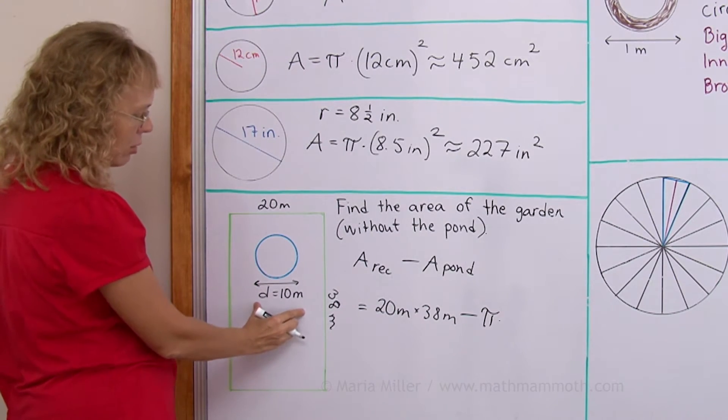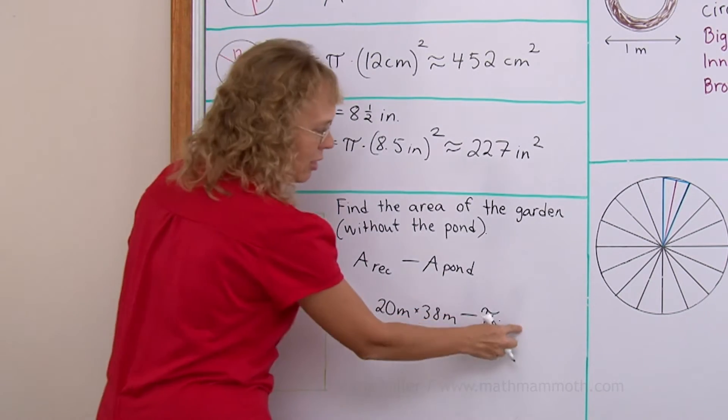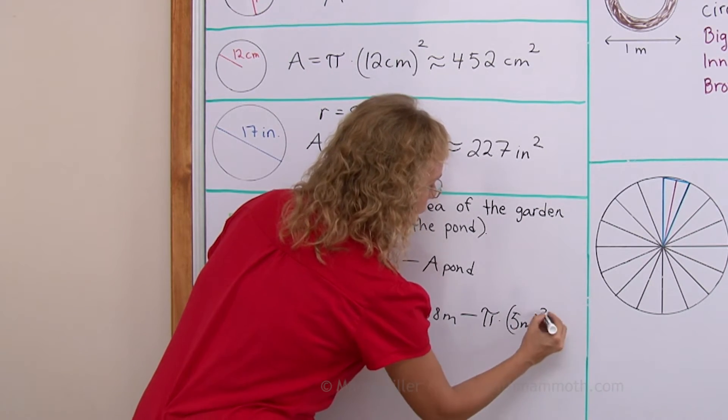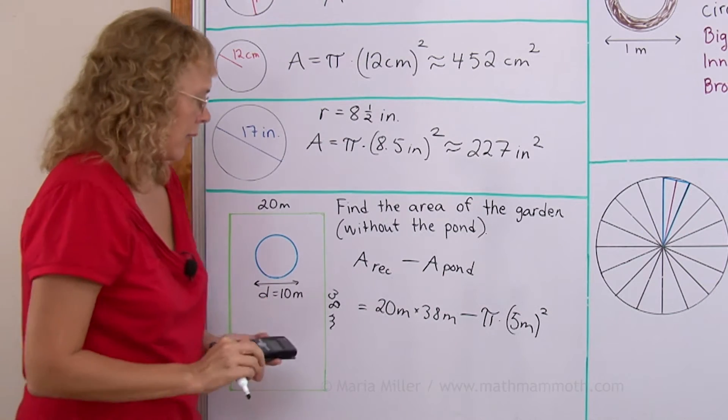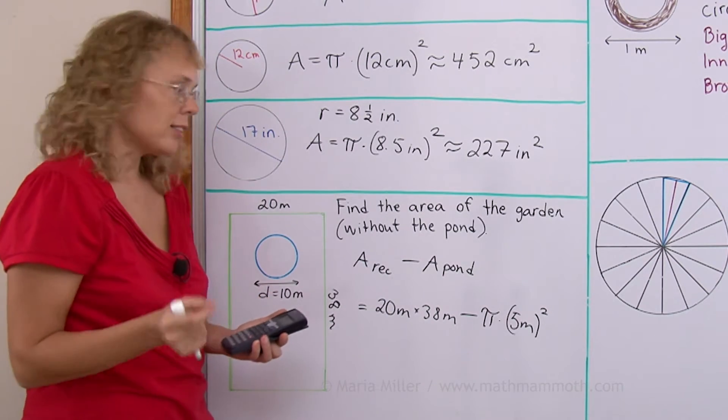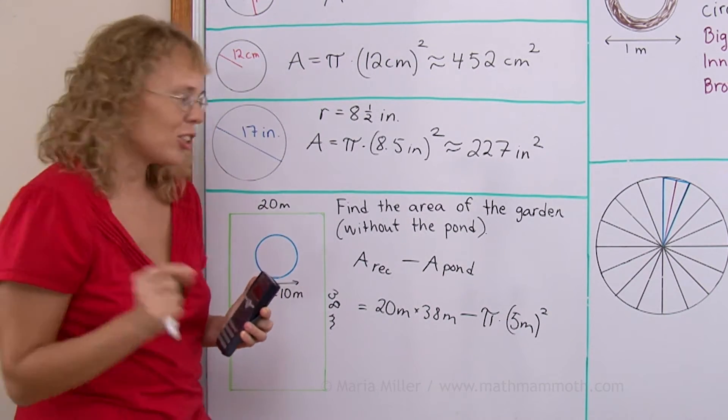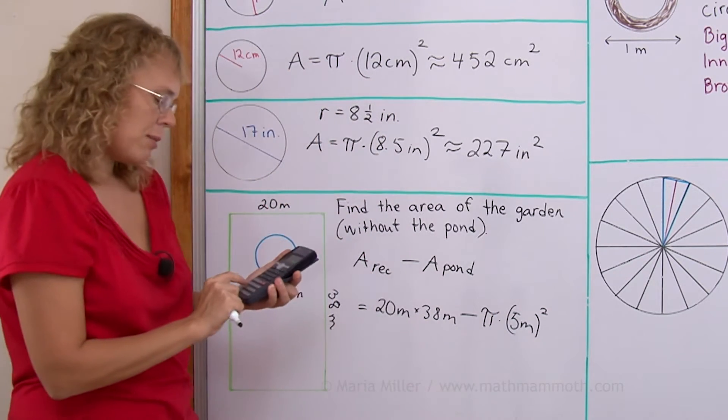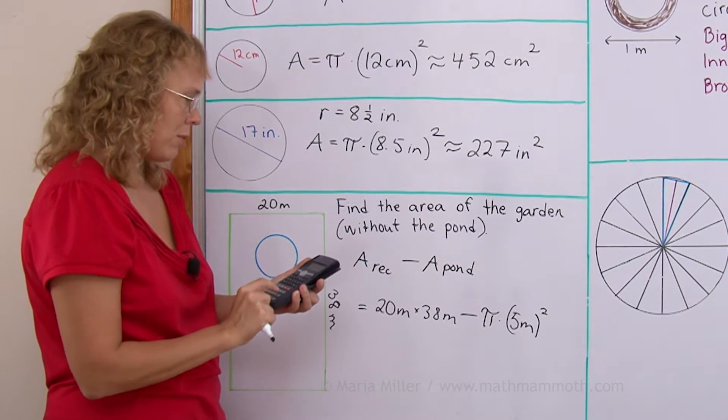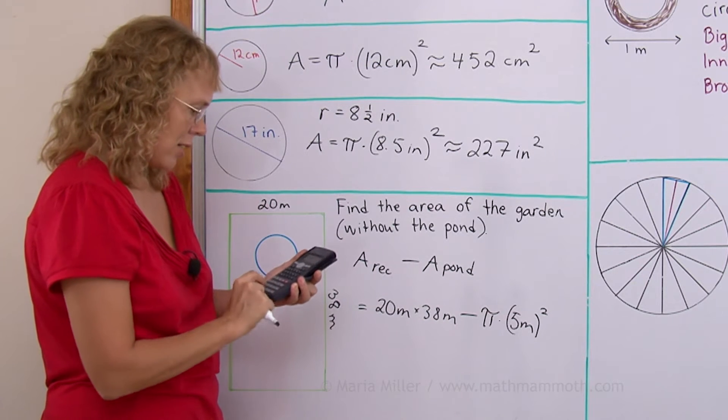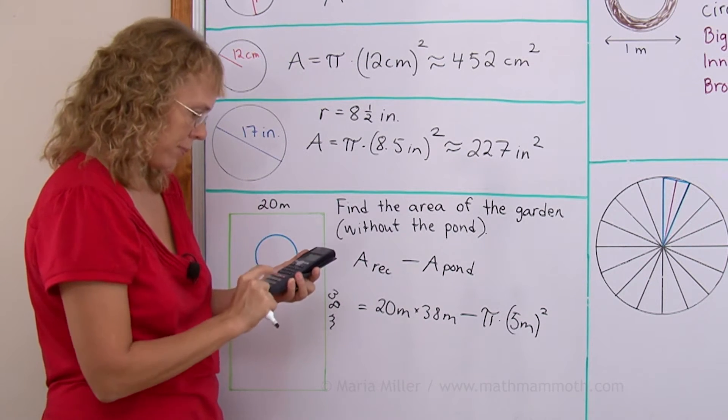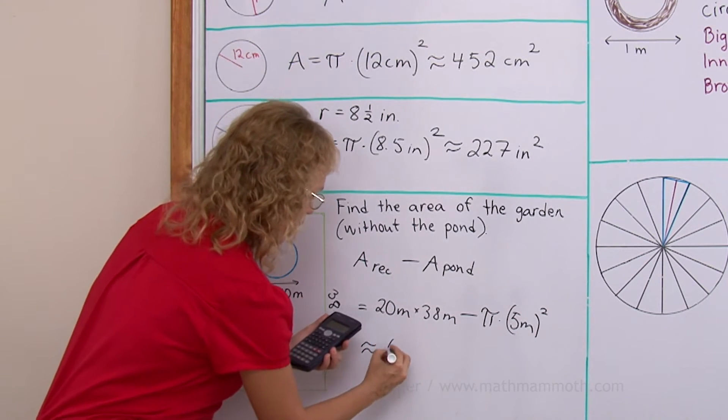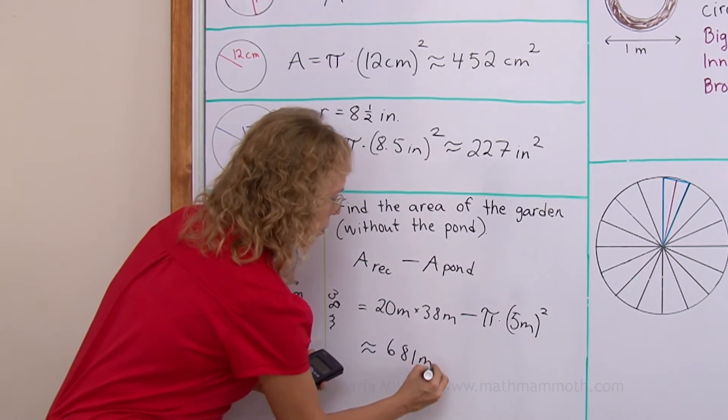And the radius is not given, so note it carefully. You cannot put 10 meters there. You have to take half of it, 5 meters, and squared. And then you can calculate, depending on your calculator, you may have to calculate this separately, and this separately, and then subtract. But I believe mine will know the order of operations. Okay, and we will get about 681 square meters.